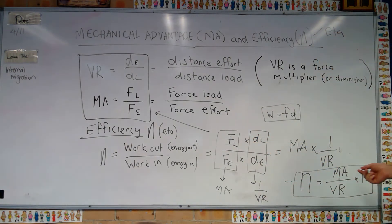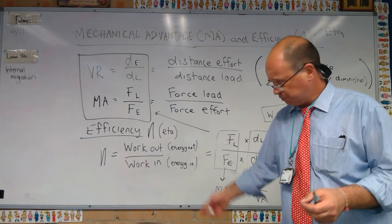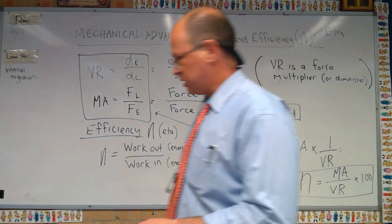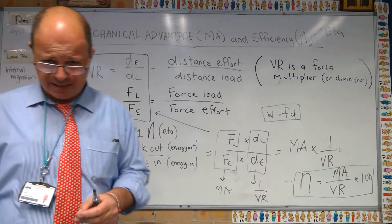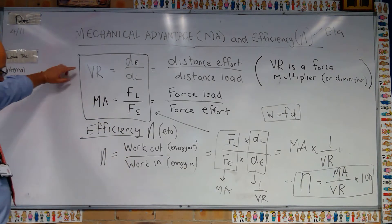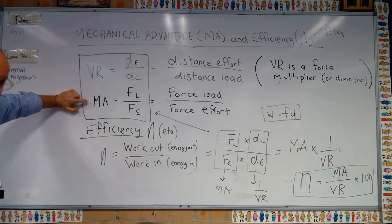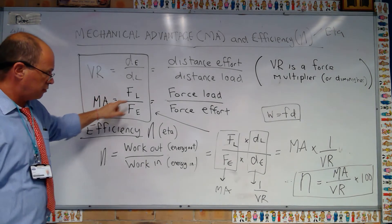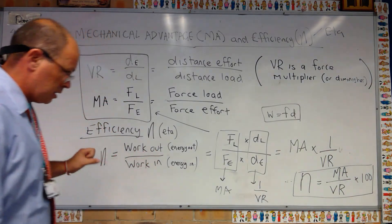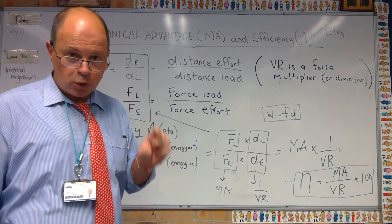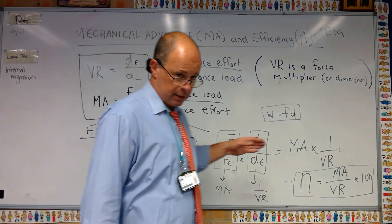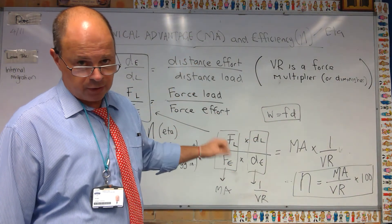Once you start getting a mechanical advantage less than your velocity ratio, the force out is not going to be as high as the VR predicts. Unless you understand these ideas, you will start to make errors. To summarise: there's an equation for velocity ratio we learned previously, and for mechanical advantage — force load over force effort — and VR equals MA only at 100% efficiency.